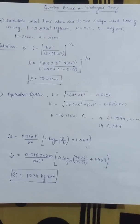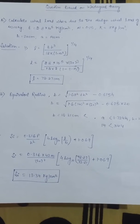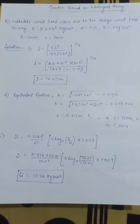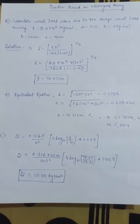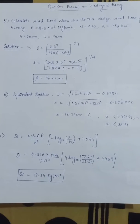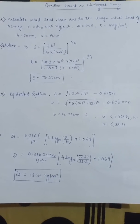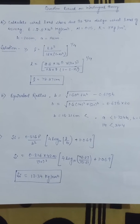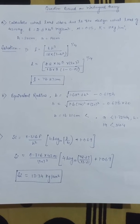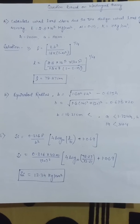E is modulus of elasticity which is given in the question as 2.8 × 10^5 kg per cm². The value of μ, Poisson's ratio, given in the question is 0.15. The value of K, modulus of subgrade reaction, is given as 7 kg per cm³.